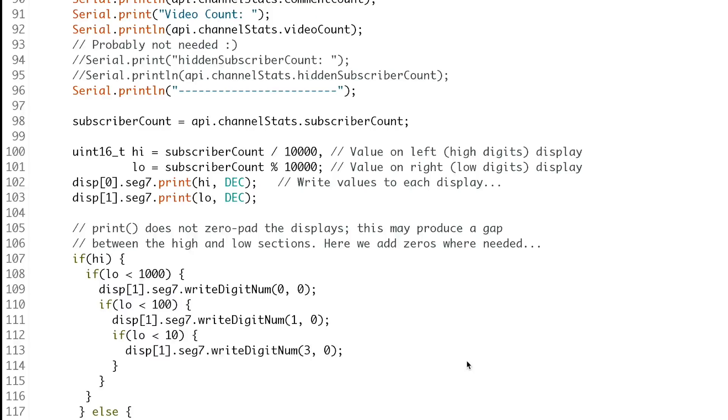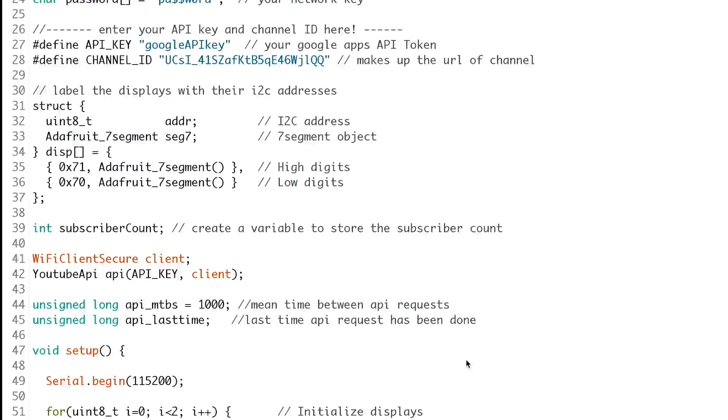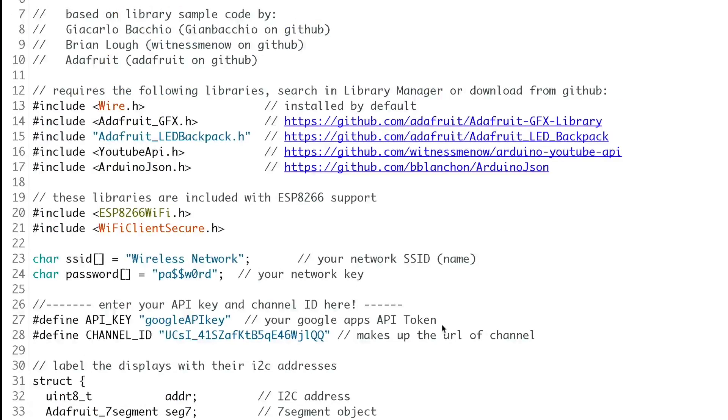The network components of this sketch use Brian Lau's YouTube API library for Arduino. You just supply your Google API key, YouTube channel ID, and your Wi-Fi credentials.